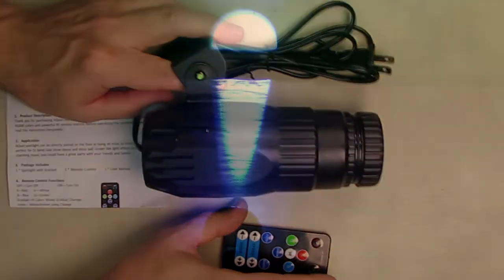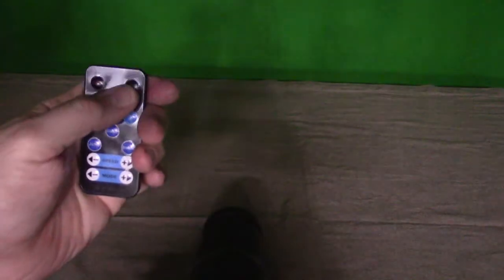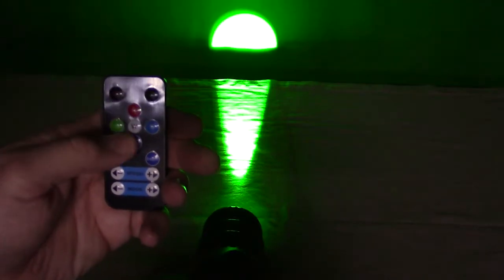Here I have it on my studio table, and you can see the colors shooting against the green screen right there. So you get an idea, you have the controller, I can turn it on and off. You have solid colors: red, green, blue, white.